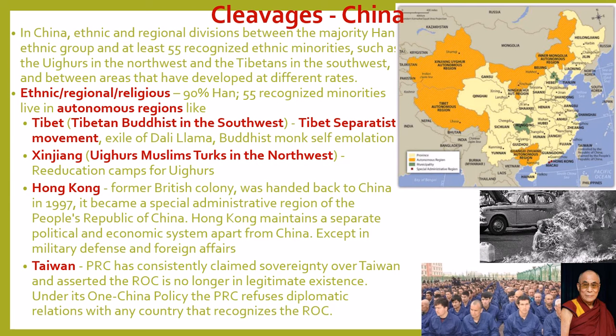In China, ethnic and regional divisions are between mainly the majority Han ethnic group and at least 55 recognized ethnic minorities, such as the Uyghurs in the northwestern Xinjiang province and the Tibetans in the southwest. These two groups are in autonomous regions, just like we saw in Russia. China does the same thing. 90% of Chinese are Han Chinese, and the other 10% includes 55 recognized ethnic minorities. Let's look at some of the biggest ones, including those that have had separatist movements.